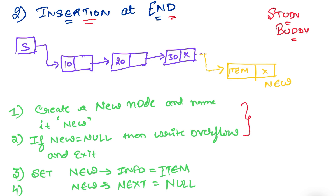Let's start. The first two points of the algorithm I will not be discussing because in the previous video I discussed them thoroughly — how the overflow condition is checked. First, what we do is create a new node, let's say called 'new', and we check if the overflow condition is there or not. If new is equal to null, then we say we are not able to create any new node.